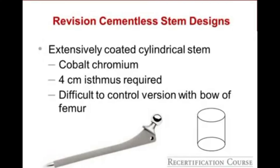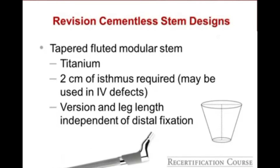Two common revision femoral stems: the extensively coated cylindrical stem, which has become less popular, requires 4 centimeters of isthmus for fixation, and tends to be stiff cobalt chrome. The tapered fluted modular titanium stem has increased in popularity — it's more flexible, requires approximately 2 centimeters of isthmus, and the nice advantage is that version and leg length can be set independent of the distal fixation. The proximal body allows variation in limb length, offset, and anteversion, which is very helpful for restoring biomechanics.